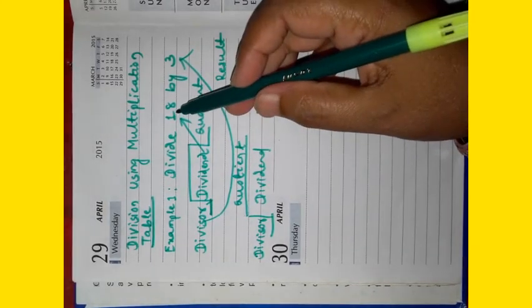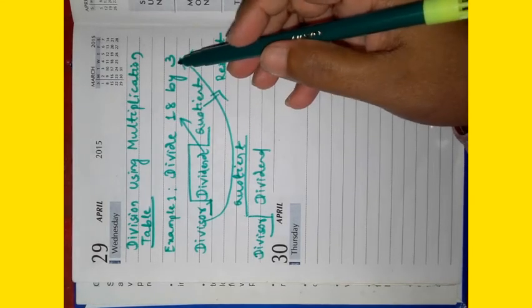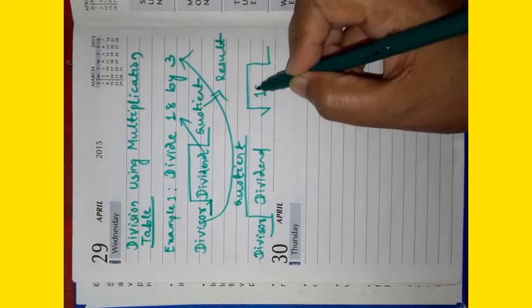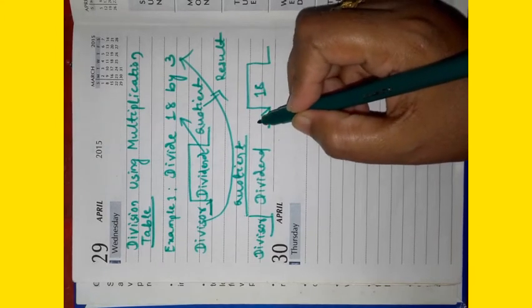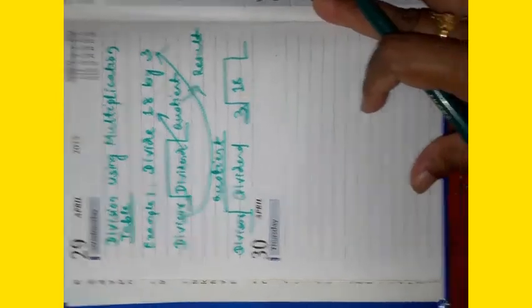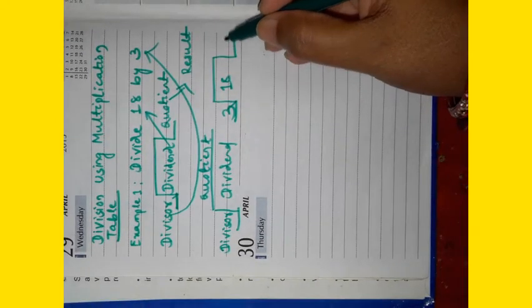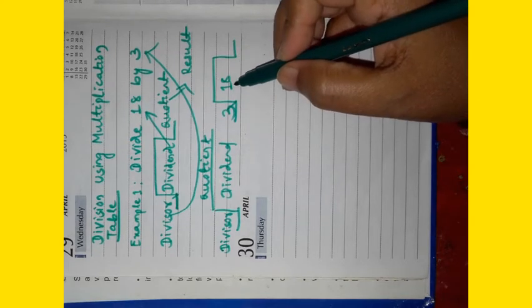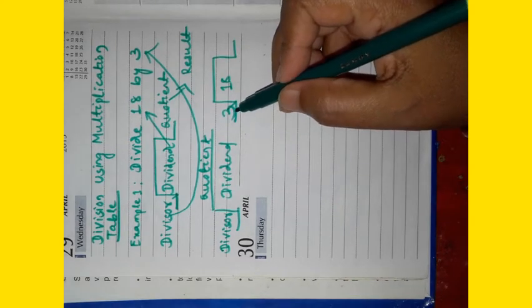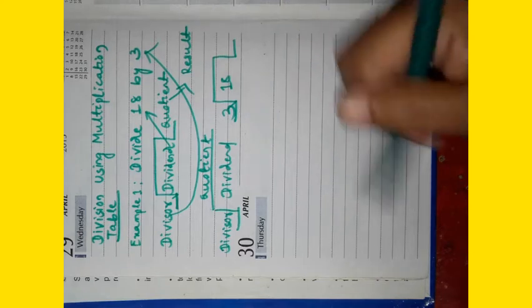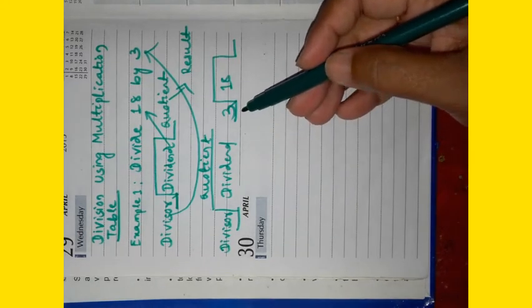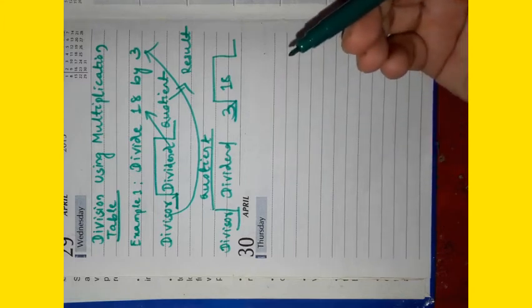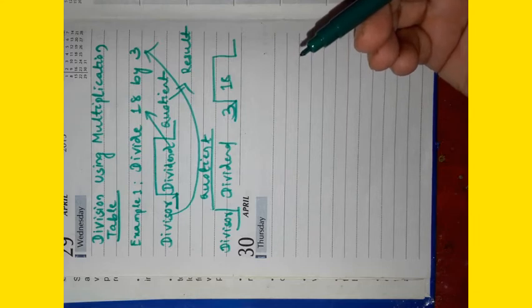Here dividend is 18 and divisor is 3. We can write it like this. Here 18, here 3, and we have to write the quotient here. First, what do we have to do? Here we have to divide 18 by 3, so recite the multiplication table of 3 up to we reach 18.